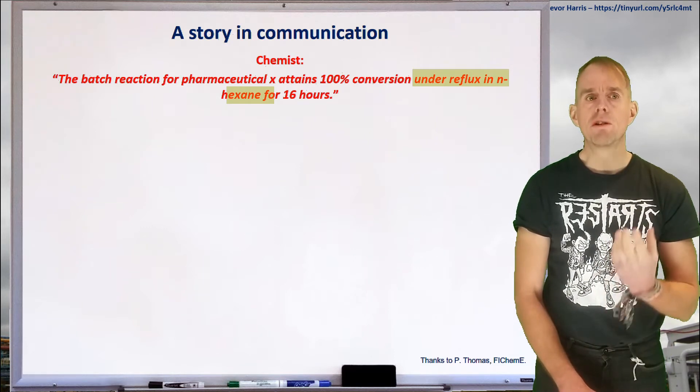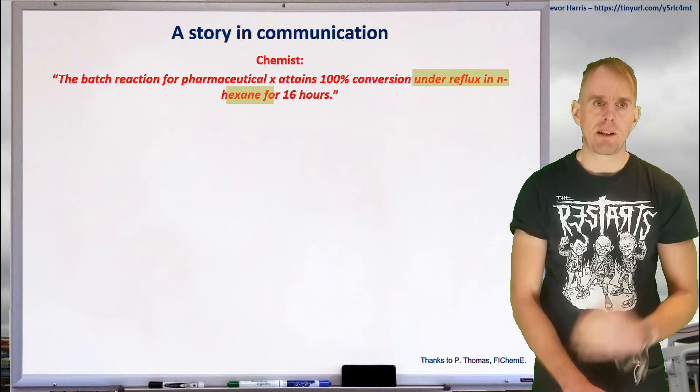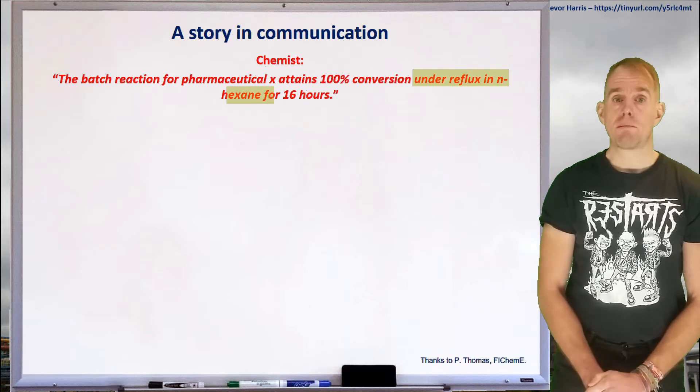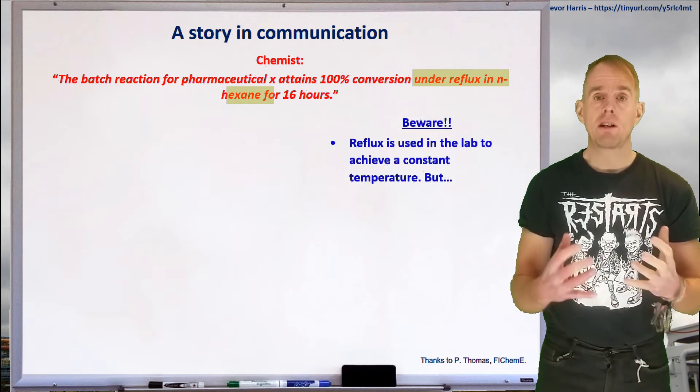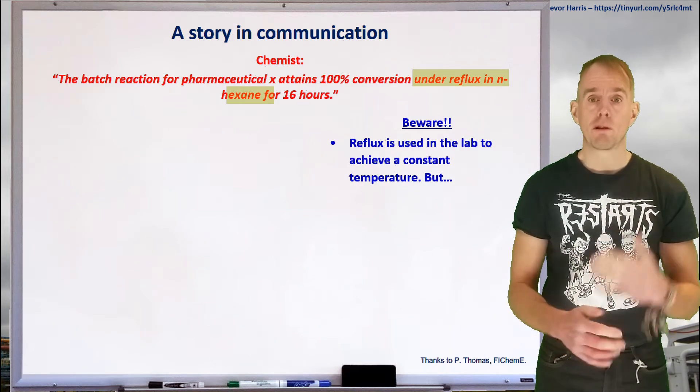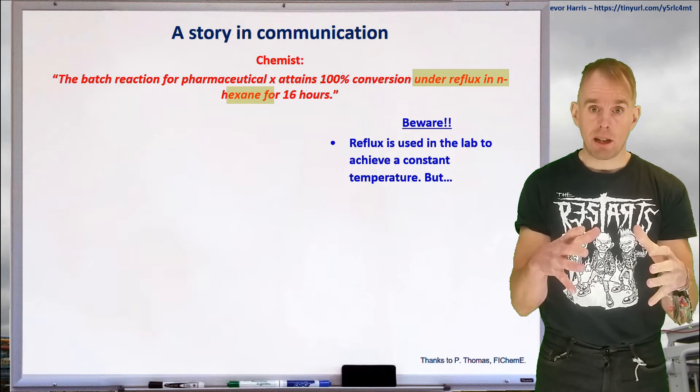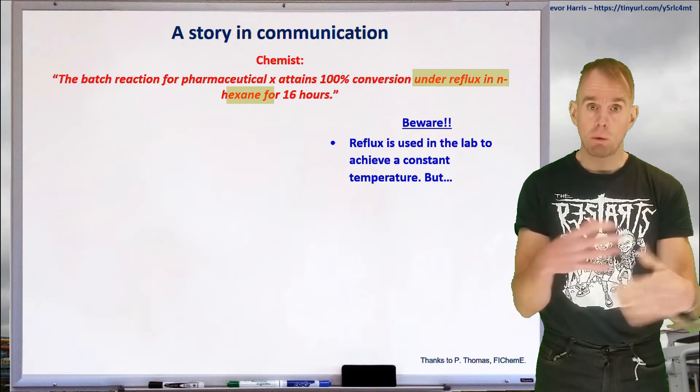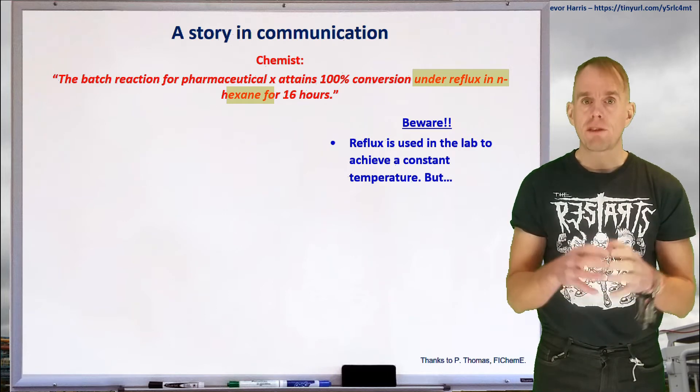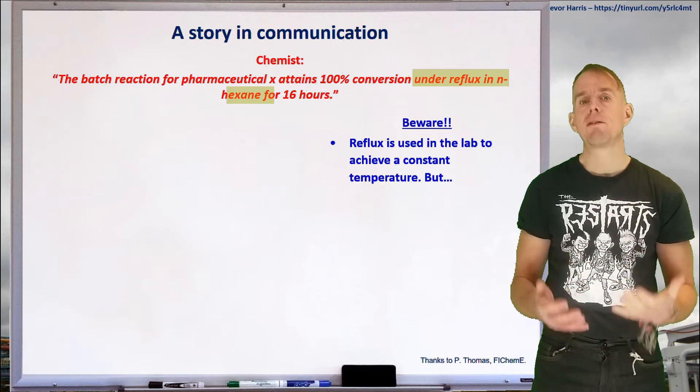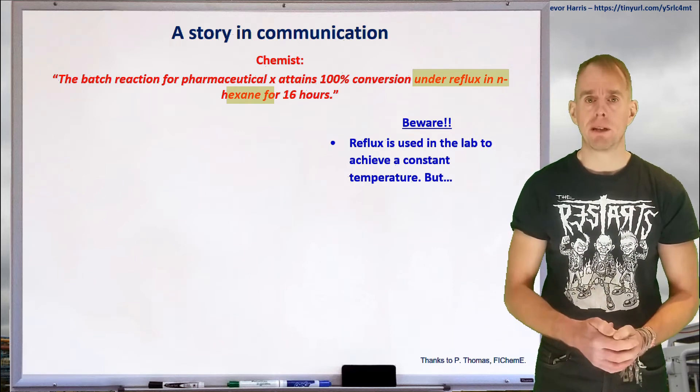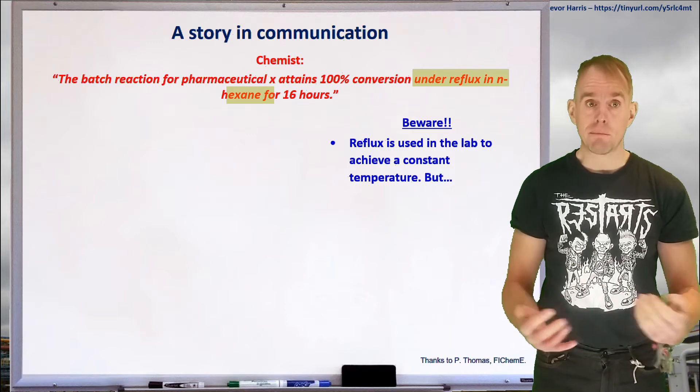So why would a batch reaction in the laboratory be refluxed under hexane? The answer to that question is temperature control. And so what happens in the R&D chemistry lab is that a solvent with a known boiling point is often boiled away, the flask is either submerged or the solvent's combined with the reacting mixture, and that constant temperature is achieved thanks to that boiling process. Now this is something we would never, ever do on a plant. I mean, the volumes of flammable solvent involved would be, frankly, a safety nightmare, putting it mildly.